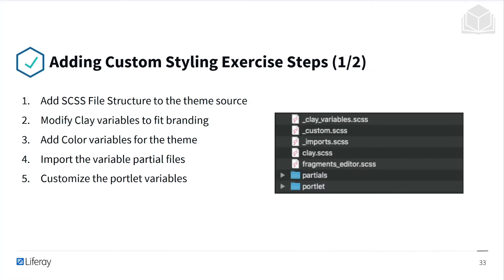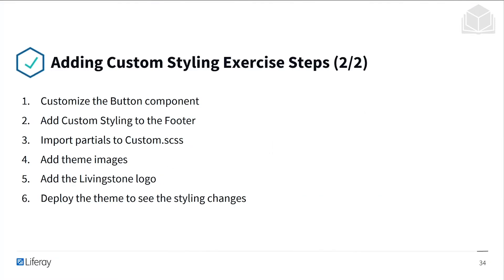Here are the steps that we'll be taking in the exercise. First, we'll add the SCSS file structure to the theme source. We'll modify clay variables to fit branding, add color variables for the theme, import the variable partial files, and then customize the portlet variables. We'll customize the button component, add custom styling to the footer, import the partials to the custom partial, add theme images as well as the Livingston logo, and finally deploy the theme to see the styling changes.